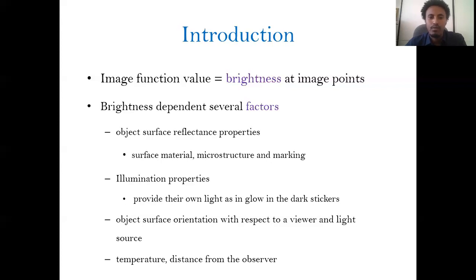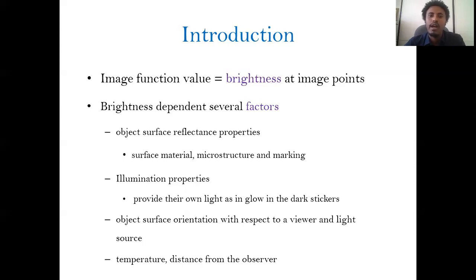One factor is the object's surface reflectance properties. Light can be absorbed or reflected by an object — if most of the light is absorbed you may not be able to see the object; you'll see it if light is reflected. Illumination property also affects brightness — a dim light and a bright light give different image senses. Some objects like fluorescent objects may also emit light. Object surface orientation with respect to the viewer and the light source, temperature, and distance from the observer also affect brightness.